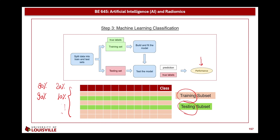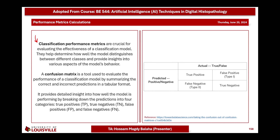During the training and testing process, we need to judge whether the model is fitted and generalizable. This can be done using quantitative measures called performance metrics or evaluation metrics. These metrics take the true labels and the predictions and extract values such as accuracy, recall, and precision. Based on the resulting values, we can judge whether the model is sensitive to certain classes over others, or whether it is generalizable with high performance. Performance metrics are crucial for evaluating the effectiveness and generalization of a classification model — they help determine how well the model differentiates between classes and provide insights into the model's behavior.